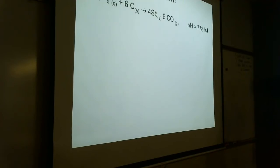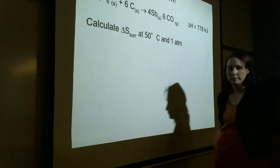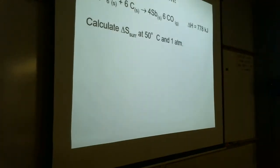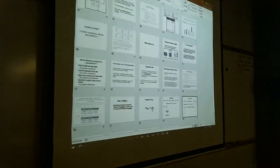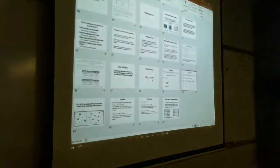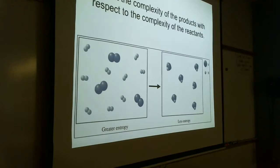Here's another reaction — find delta S of the surroundings at 50 degrees Celsius and one atmosphere pressure. The answer is 2.41 kilojoules per Kelvin.